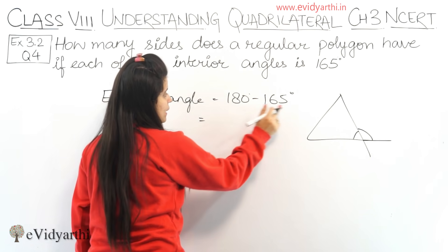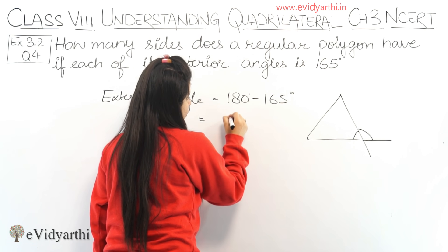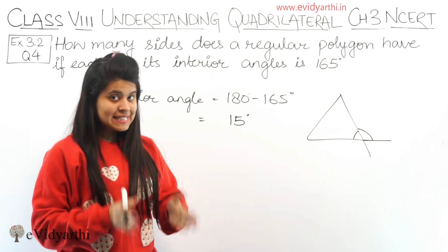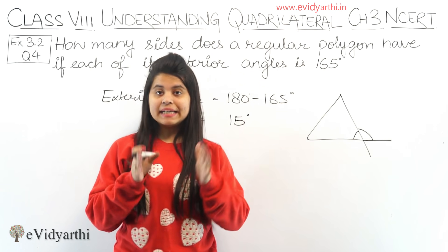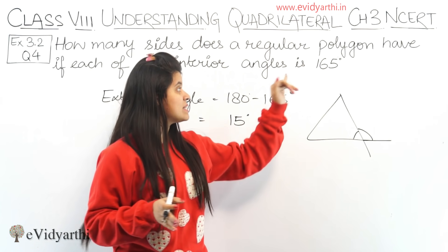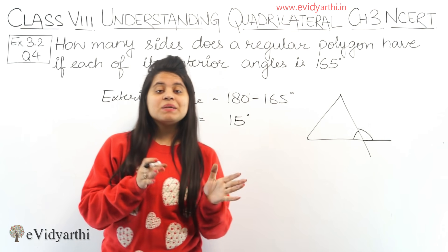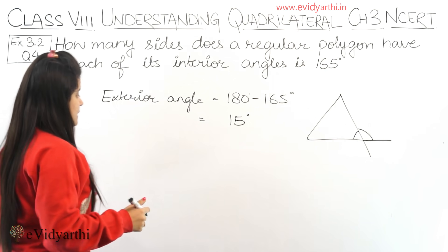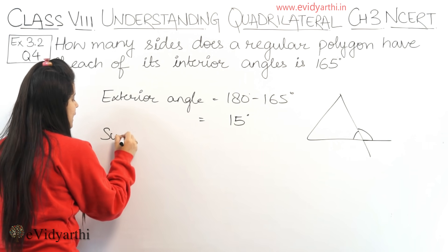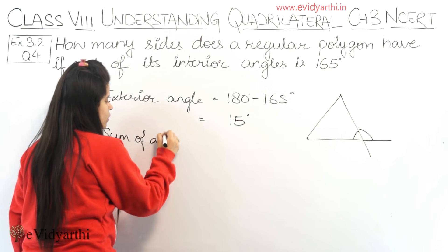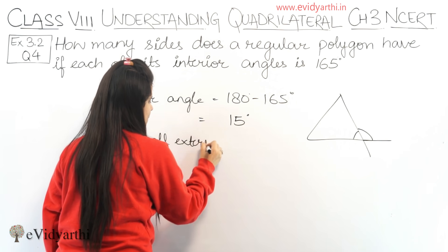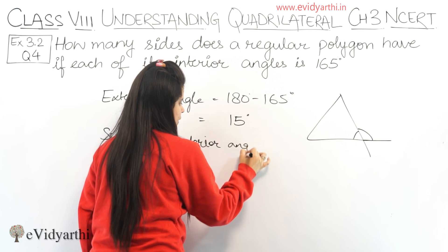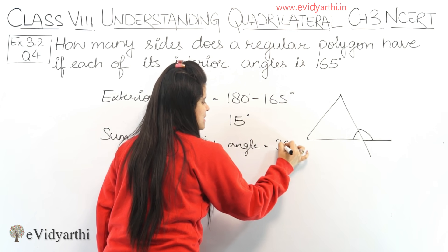So this will be 15 degrees. Since each interior angle is 165 degrees, each exterior angle is 15 degrees. Now we have the exterior angle, and we know that the sum of all exterior angles equals 360 degrees.